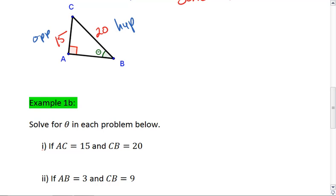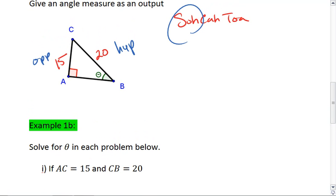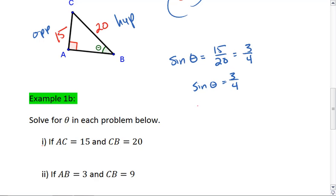Now, since we're working with opposite and hypotenuse, that's going to be sine. We get sine of theta equals 15 over 20, which reduces to 3 fourths. To solve for theta, to move sine to the other side, we take what's called the sine inverse. And on your calculator, that's going to be sine to the negative 1 button. So theta is going to be sine inverse of 3 fourths.